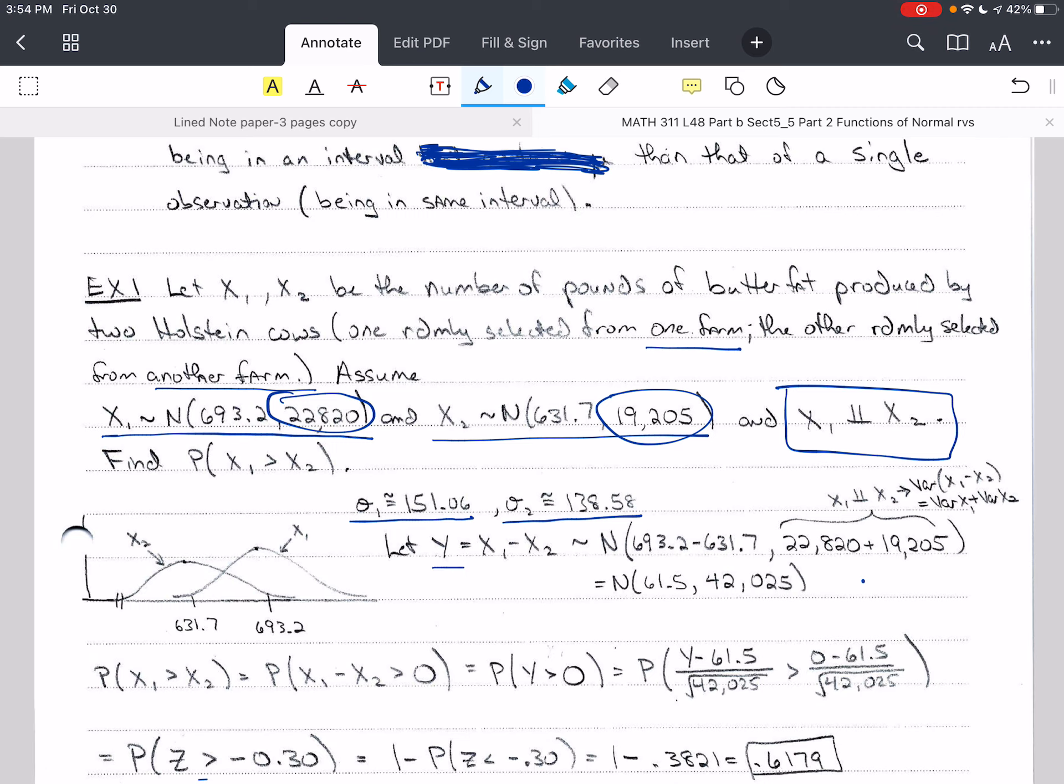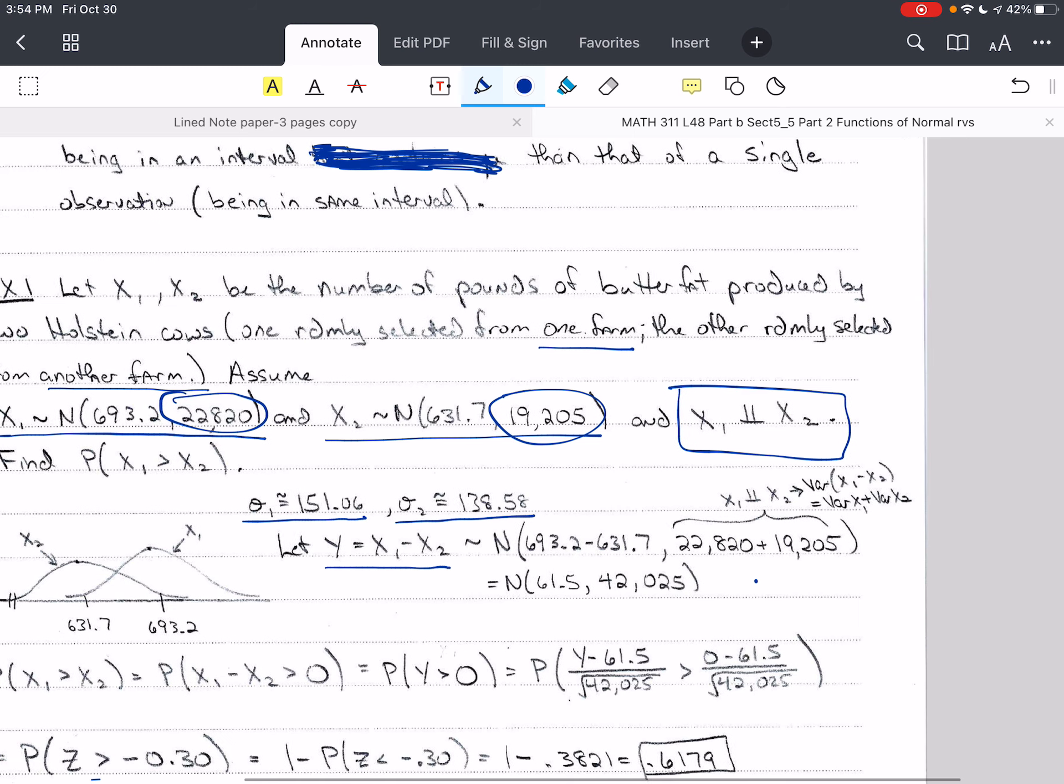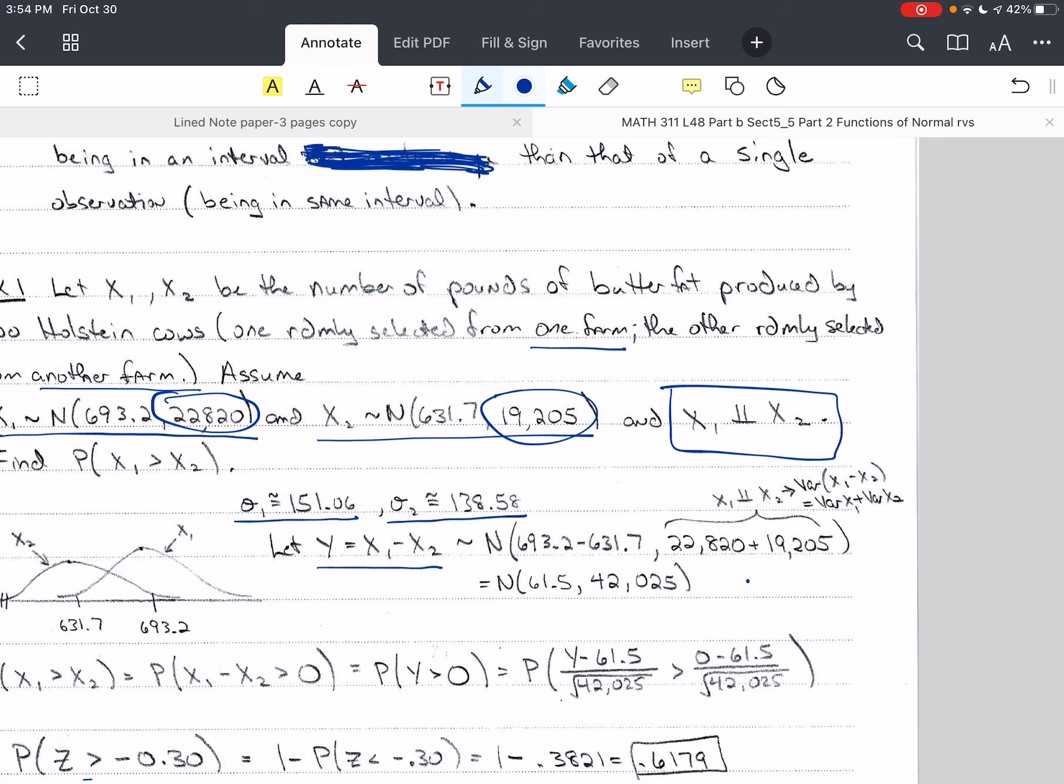We want to define y as the difference between x₁ and x₂. These are normally distributed, and we actually proved in section 5.2 what the distribution of this is, but we also proved that earlier with the linear combination of independent normal random variables. So this is the linear combination, x₁ minus x₂. So we take that same linear combination of the means.